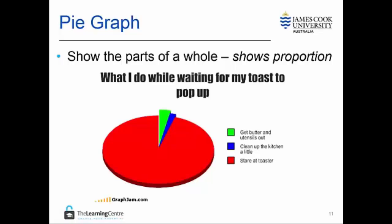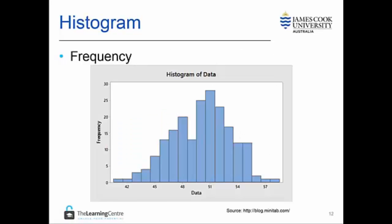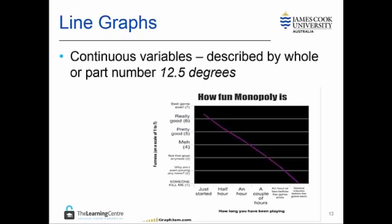Pie graphs are used to compare the size of the relative parts that make up a whole — that is, they show proportion. Histograms show the frequency of an occurrence. They look like a bar graph except that the bars have no space between them, so you can see the relationship between them easily. Line graphs and scatter plots relate to continuous variables, which are those that can be described by any whole or part number, such as temperature at 12.5 degrees.